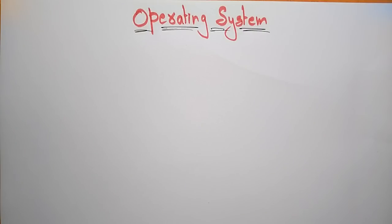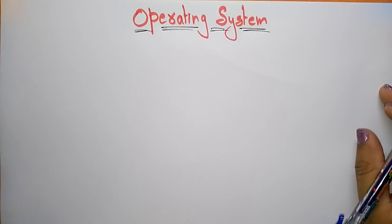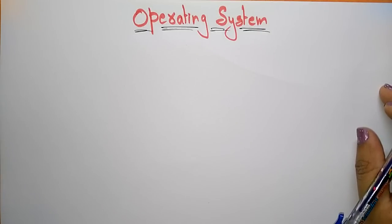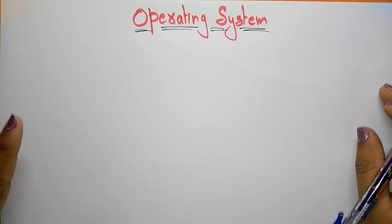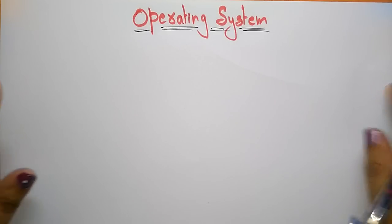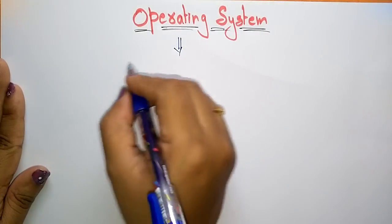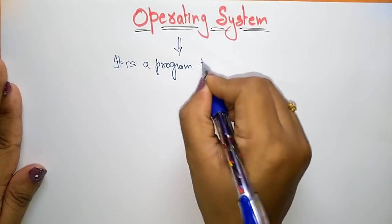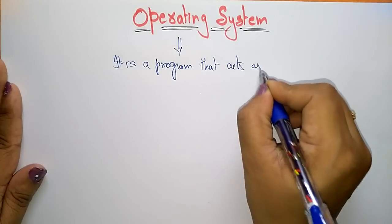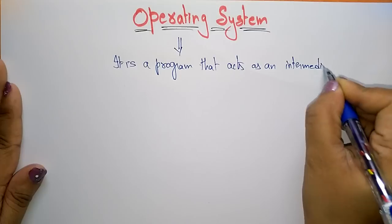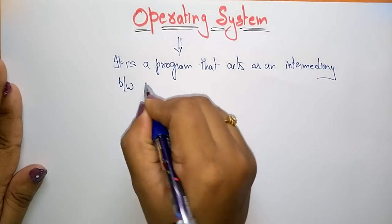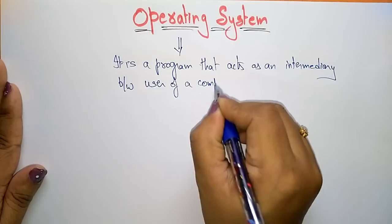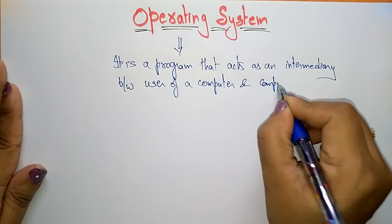Welcome students, coming to the next subject: the operating system. Everyone is familiar with operating systems because nowadays every electronic gadget and computer system works only based on the operating system. Without the operating system, your equipment will not work. An operating system is nothing but a program that acts as an intermediary between the user of a computer and the computer hardware.